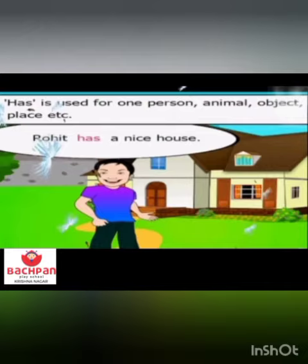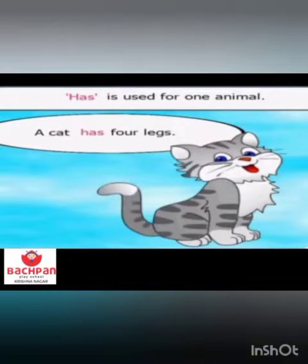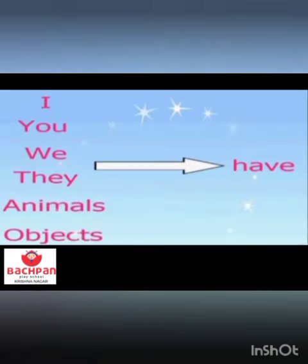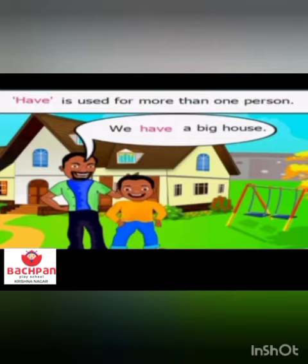Rohit has a nice house. A cat has four legs. See the picture of the cat. A clock has two hands. Children, we use 'have' with I, you, we, they, animals, and objects.